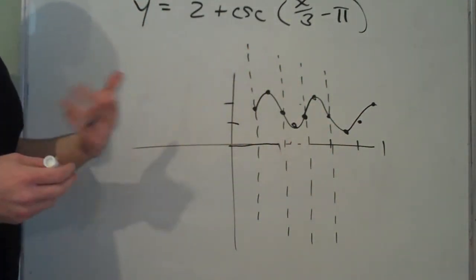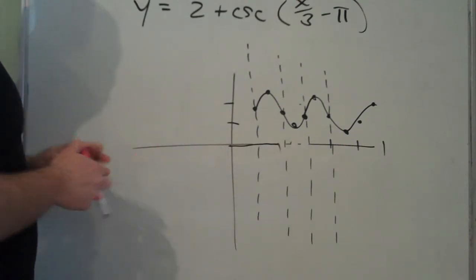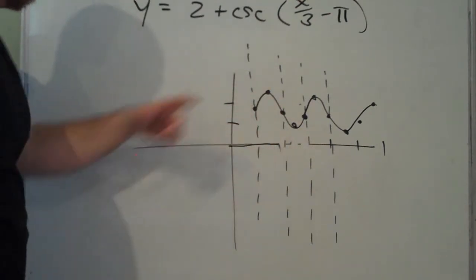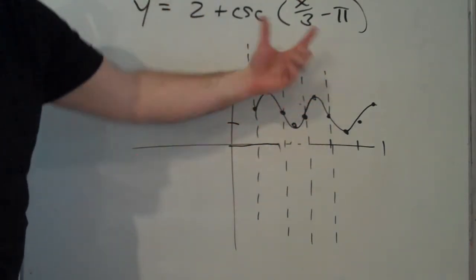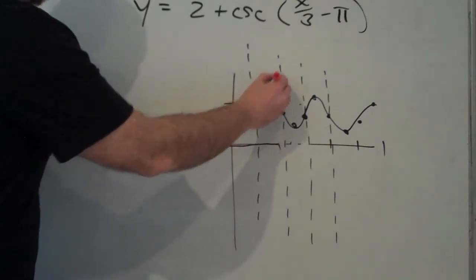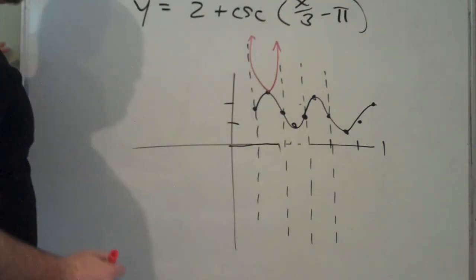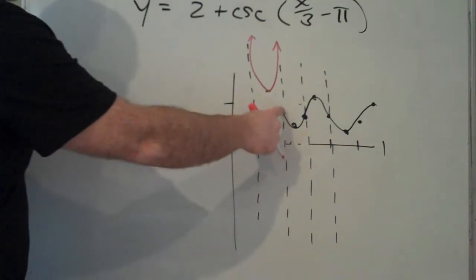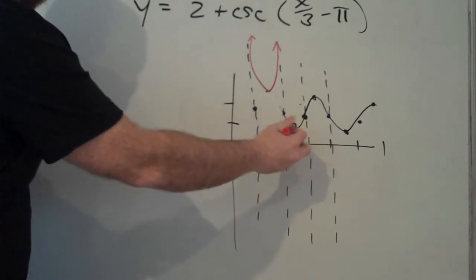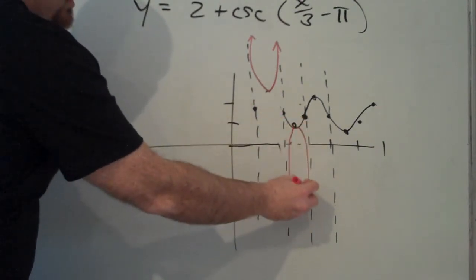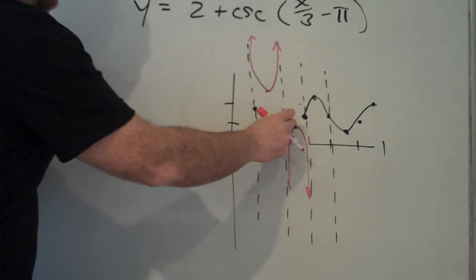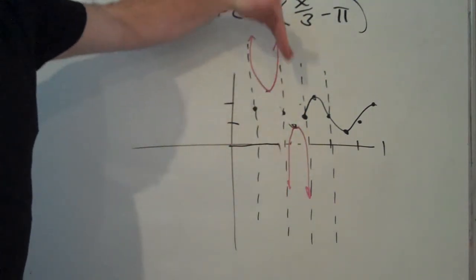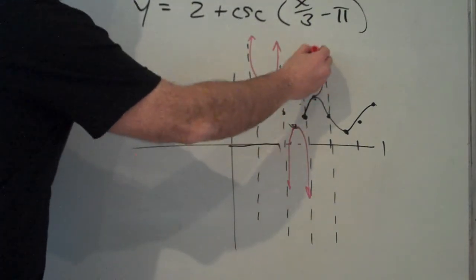Now, because cosecant is the flip of sine, we take this piece that falls in between these two asymptotes, we take that frown, and we turn it upside down. We flip it. So the cosecant graph is here. This is sine. We graphed sine in order to get cosecant. Now this, this smile, we turn that upside down, and we give it that asymptotic behavior. So we were using the sine graph to give us those bumps. The intercepts become asymptotes, and then the bumps, we flip.